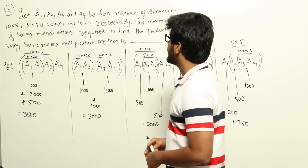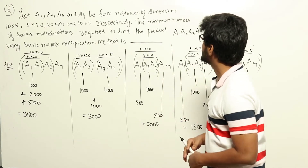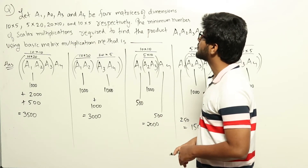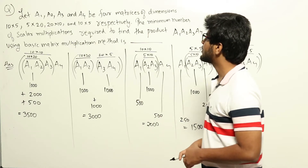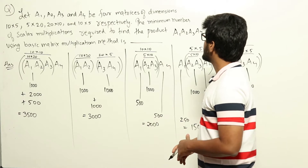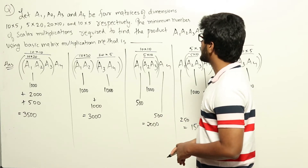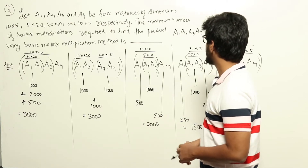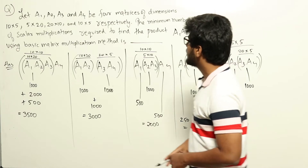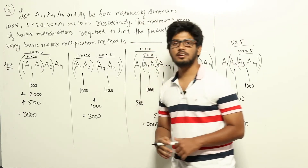Let A1, A2, A3 and A4 be four matrices of dimensions 10×5, 5×20, 20×10 and 10×5 respectively. The minimum number of scalar multiplications required to find the product A1·A2·A3·A4 using basic matrix multiplication method is?